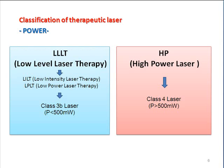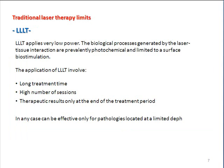Classifications of lasers are also based on power. Less than 500 milliwatts is known as low level laser therapy or LLLT. Greater than 500 is your class 4 lasers or high power. The class 3B lasers are below 500 milliwatts. Low level laser therapy applies very low power, so the application involves longer treatment times and a higher number of sessions.